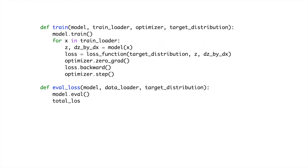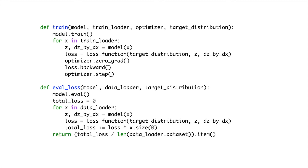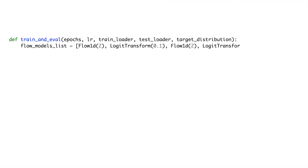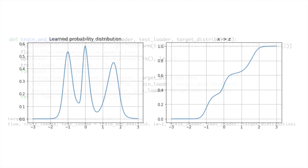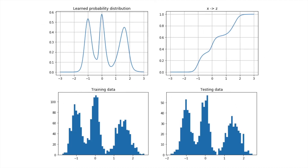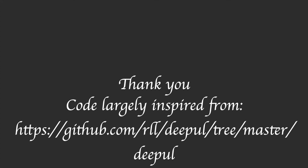The training and testing pipeline is very standard — feel free to pause the video for a detailed look. After training, this is what the learned probability distribution looks like. Comparing it to the actual distribution of our training and testing data, you can see that the model has learned the distribution of the actual data very closely. The link to the code for this video is in the description below. Thank you all for watching.